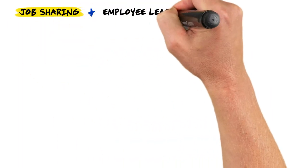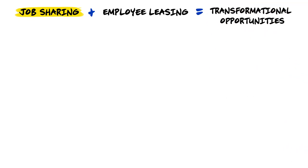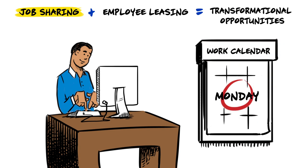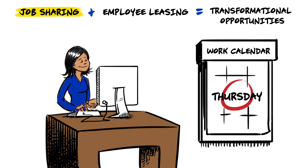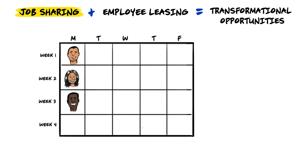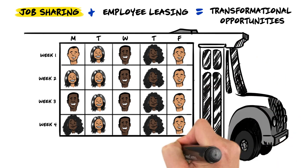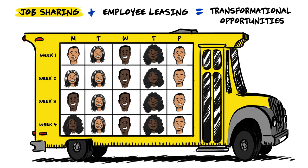Here's how the model works. Job sharing plus employee leasing equals transformational opportunities. A team of four students covers one full-time equivalent position without missing class. They work 9 to 5, Monday through Friday, from mid-August to early June, with an option to work year-round. And the school transports the students to work.